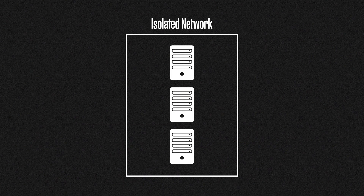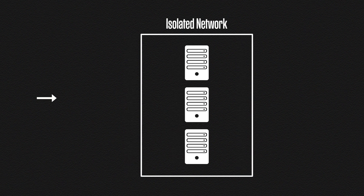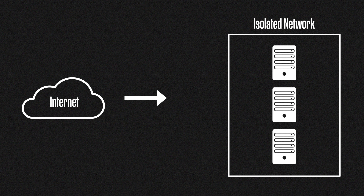So imagine you have multiple servers in an isolated network. This could be your home network, a corporate network, or even a cloud network hosting some web servers. Now what if you wanted access to these servers remotely, say over the internet? Well, one option is to open all of your devices to the public internet. For example, you could enable port forwarding for each device, and this would work perfectly fine for your remote access. You'd be able to connect to every device from anywhere in the world.